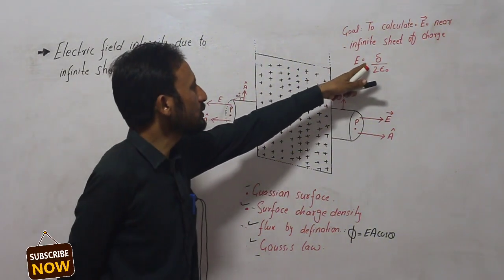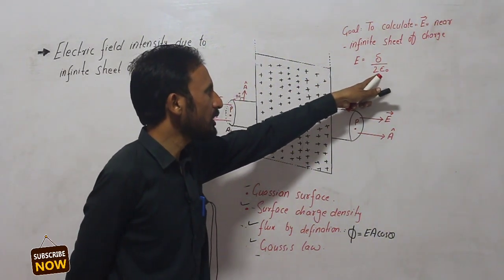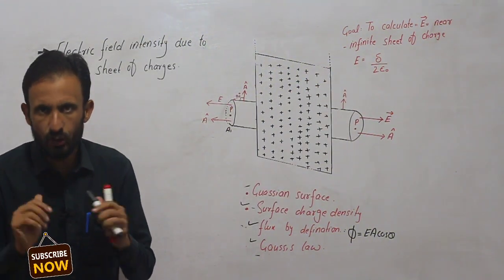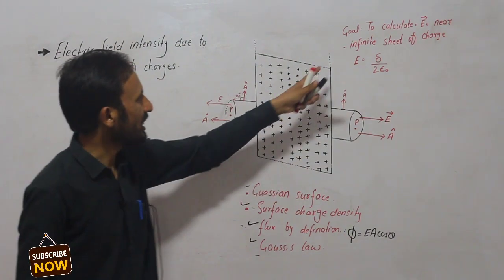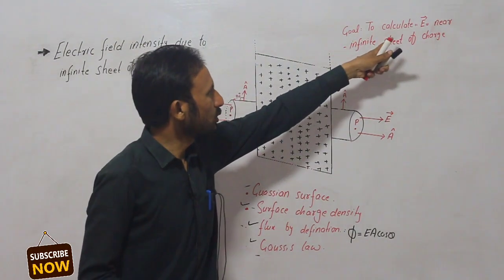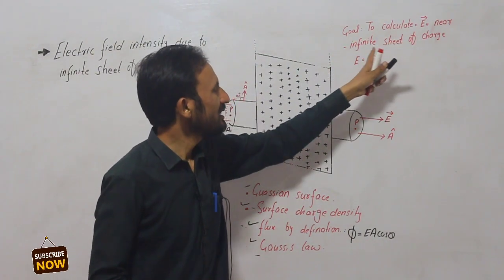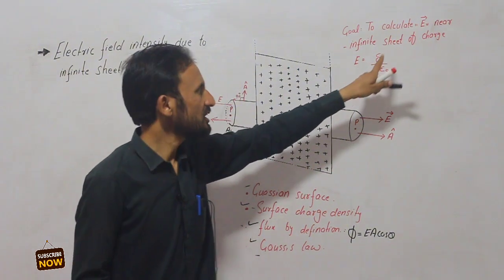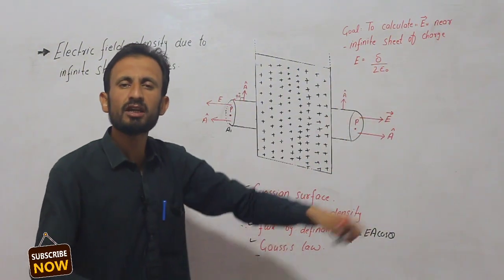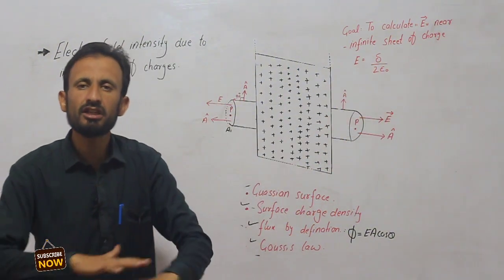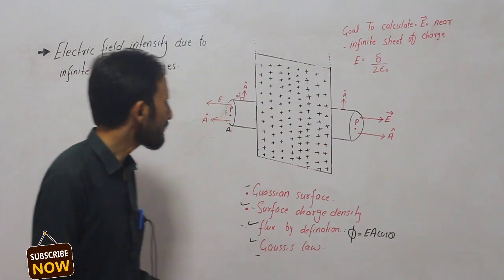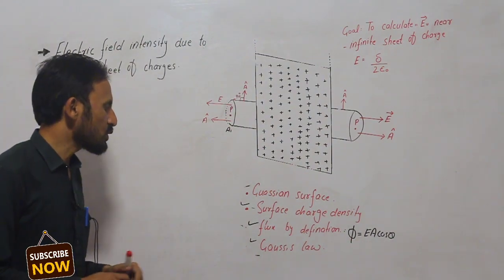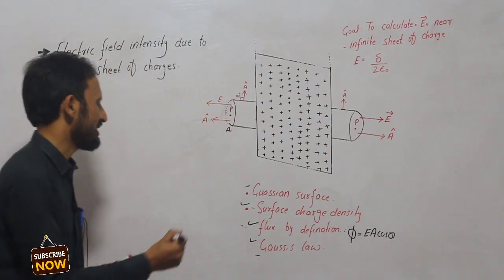Our goal in this lecture is to derive the simple equation: E is equal to sigma divided by two epsilon naught. This equation allows us to easily calculate the electric field intensity near an infinite sheet of charge.